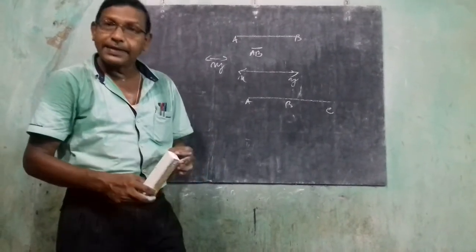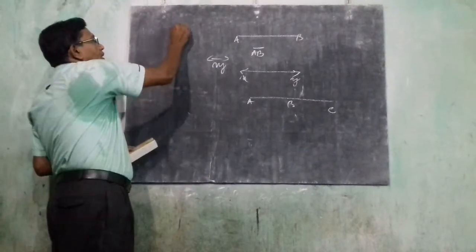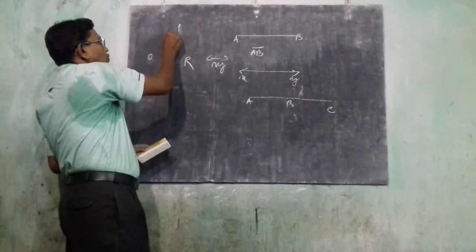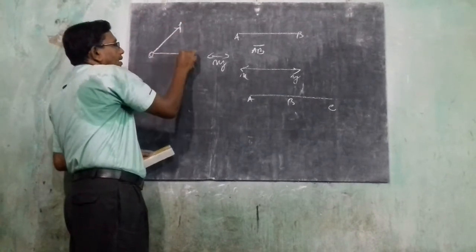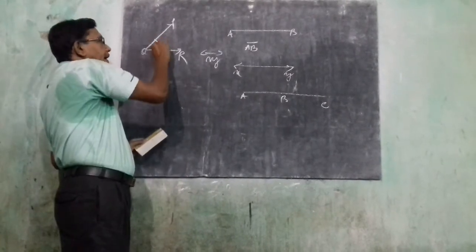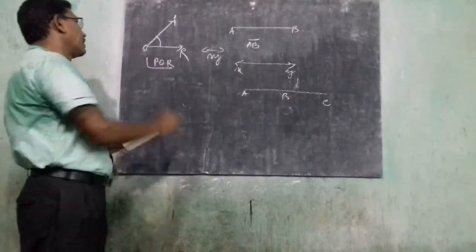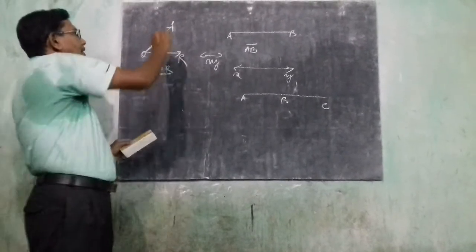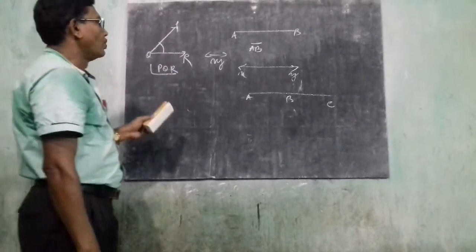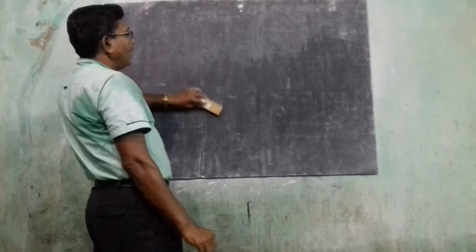Now, what is an angle? With three non-collinear points, suppose P, Q, and R are three non-collinear points. Join ray QP and ray QR — these two rays form angle PQR. In this angle, Q is the vertex, and QP and QR are known as the arms of the angle.